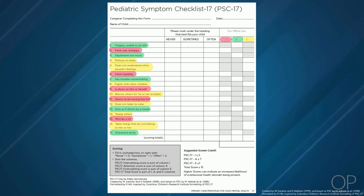It is also important to keep in mind that children who suffer from anxiety disorder are at a higher risk for comorbidities, including depression and ADHD, and it is important to screen for these disorders as well. For more information about screening for these other disorders, please reference the other videos in this series.